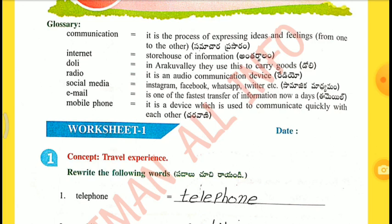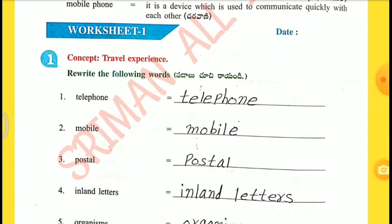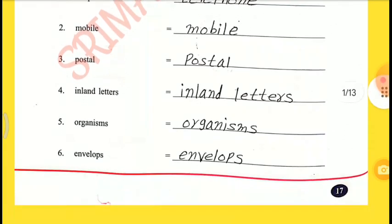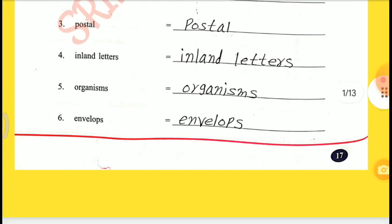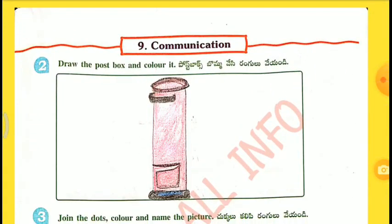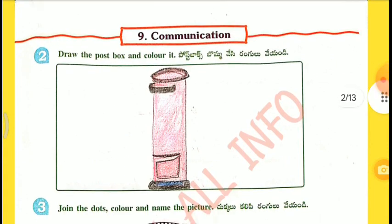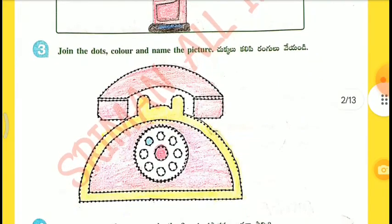Worksheet 1, Concept: Travel Experience. Rewrite the following words: Telephone, Mobile, Postal, Inland Letters, Organisms, Envelopes. Draw the post box and color it. Join the dots, color and name the picture — Telephone.